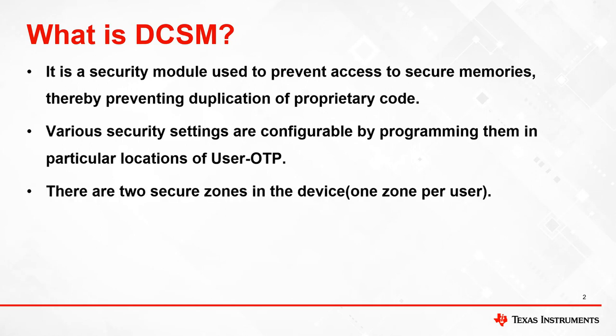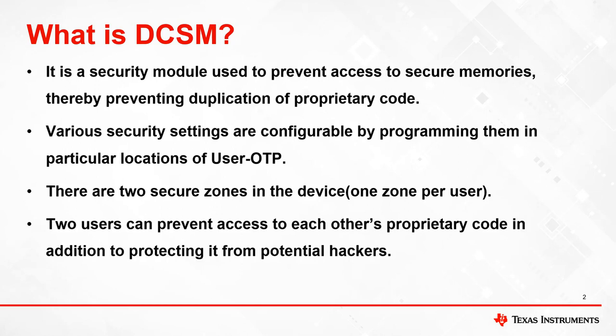This module is called the Dual Code Security Module because there are two secure zones on the device. Each zone is associated with a user, where each user can allocate memory regions to their zone and configure security settings for each memory region by programming specific fields in user OTP. Since there are two independent zones, two developers can program proprietary code on the same device while protecting the confidentiality of their code from both each other and potential hackers.